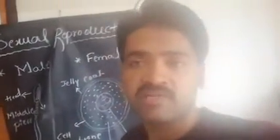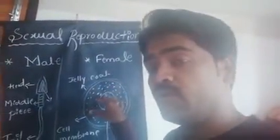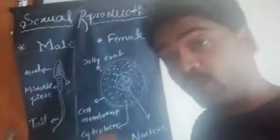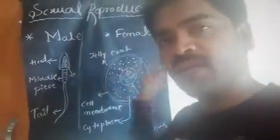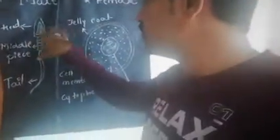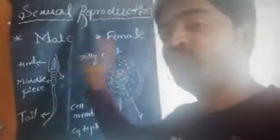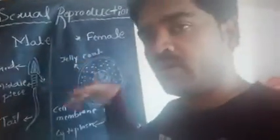Now let us move towards the next session of this lesson, that is fertilization. What do we mean by fertilization? That is the fusion of male and female gametes. When the sperm and egg combine together, this gives a chance to the formation of the zygote. The combination of male and female gametes is called fertilization. The formation of the zygote takes place by the fusion of these two cells — the sperm is a single cell and the egg is also a single cell.